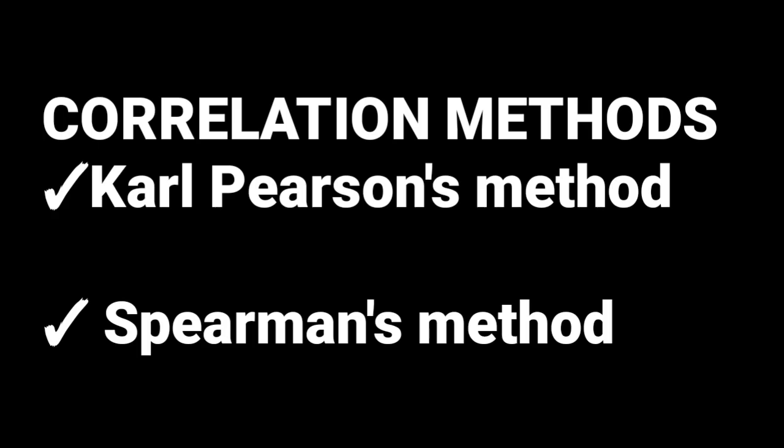The correlation methods — there are mainly two correlation methods. The first one is Karl Pearson's method, also known as the product method. The second method is called the Spearman's method. These are the methods that we shall be using in correlation analysis.